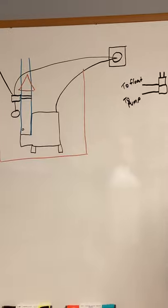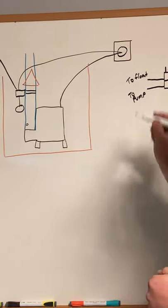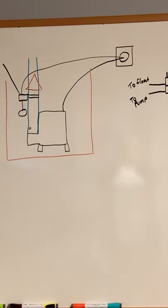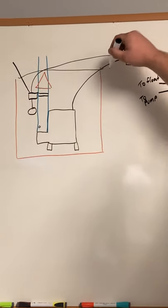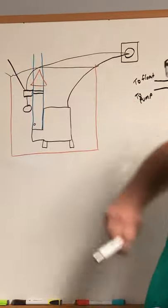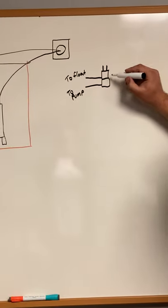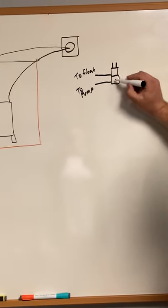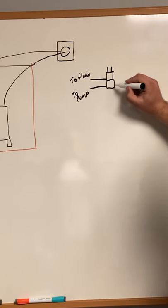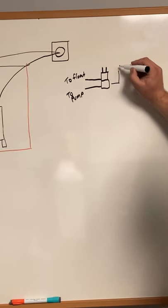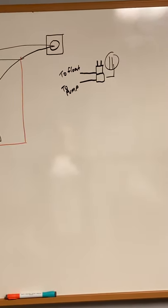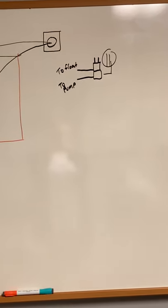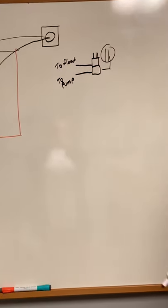So one thing you can do if you walk into your basement and you can see that your pit is extremely full, you know, like filled to the top, ready to run over, is you can actually unplug the pump from this float switch and plug this pump outlet directly into your outlet. And if the pump kicks on, that's great. If not, we've got a pump issue.